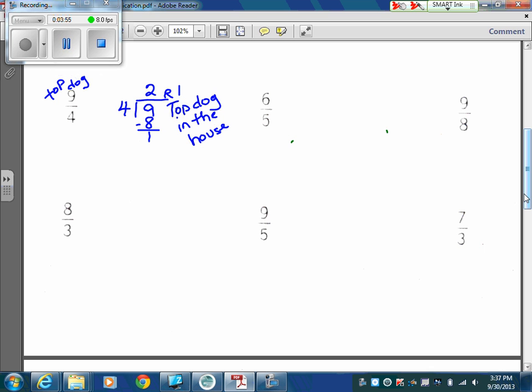Your quotient, the two, is going to be your whole number. So that's going to be my whole number is the two. My remainder is going to be the part or the numerator. And then the four, that is my total in each. So that is my denominator. So it's two and one fourth.